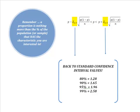I'm going to use these standard confidence interval values. I'm going to remember that a proportion is nothing more than what we're interested in, the characteristic we're interested in, divided by the total number of people either in our population or our sample. Let's work a fast problem with this and I think you guys will really get the hang of this because you're already good at the other confidence intervals.